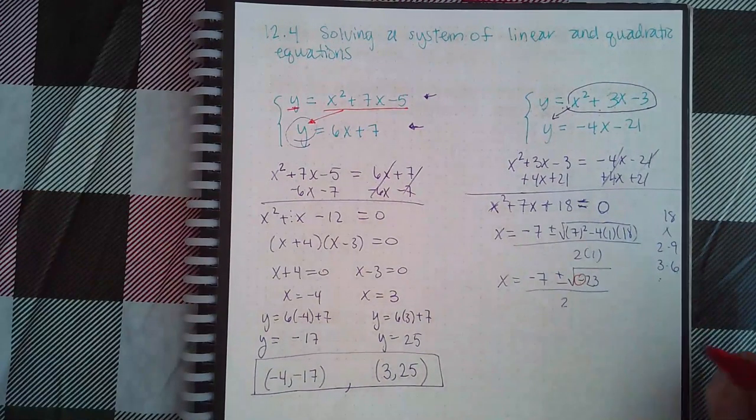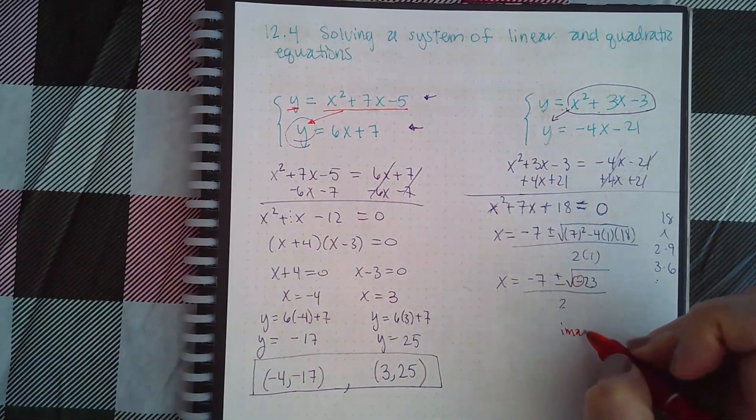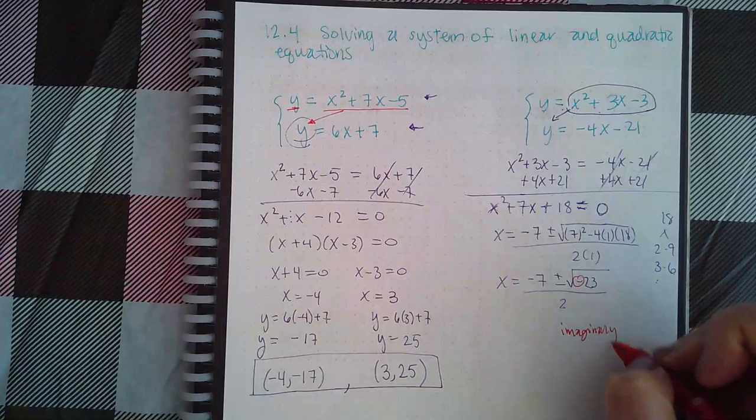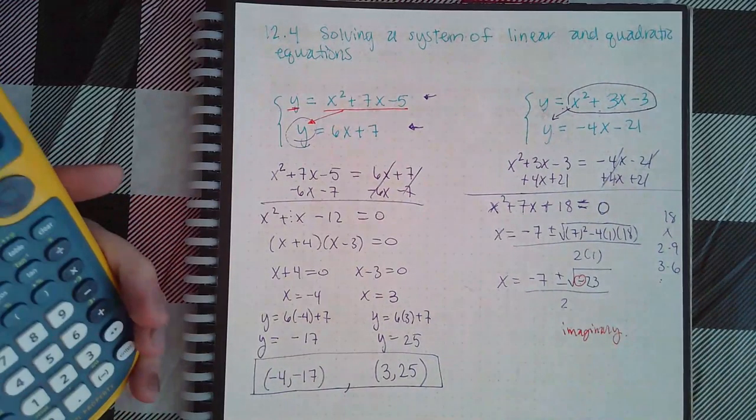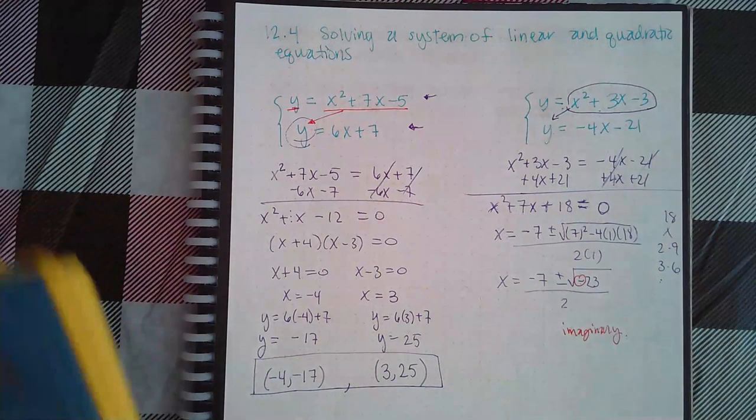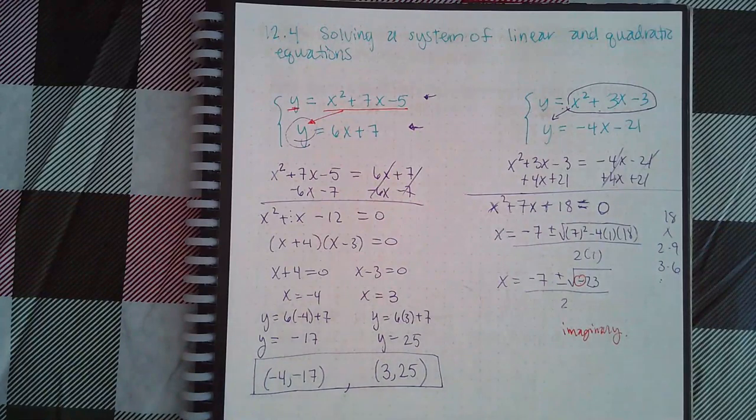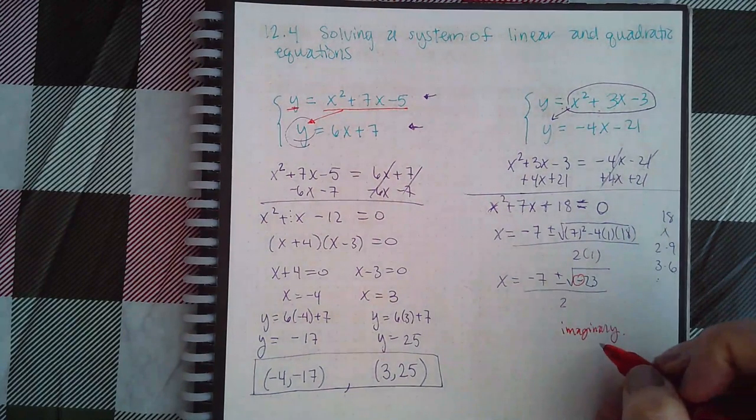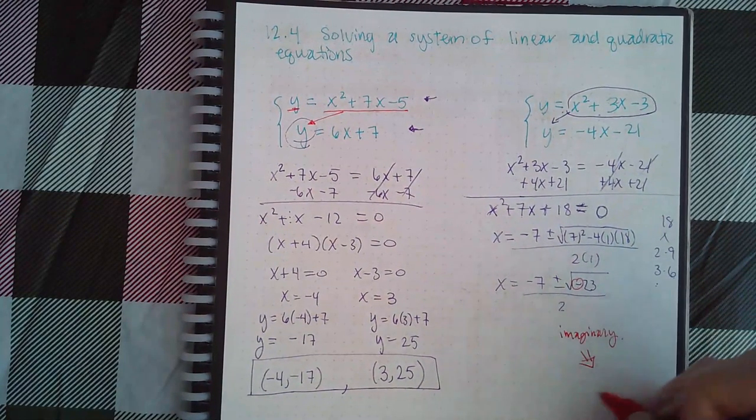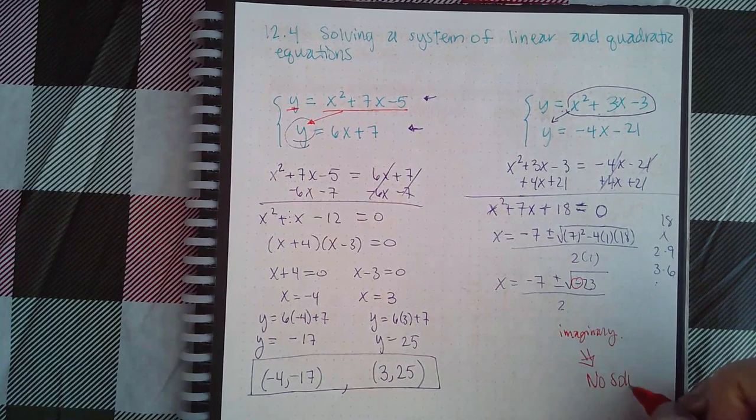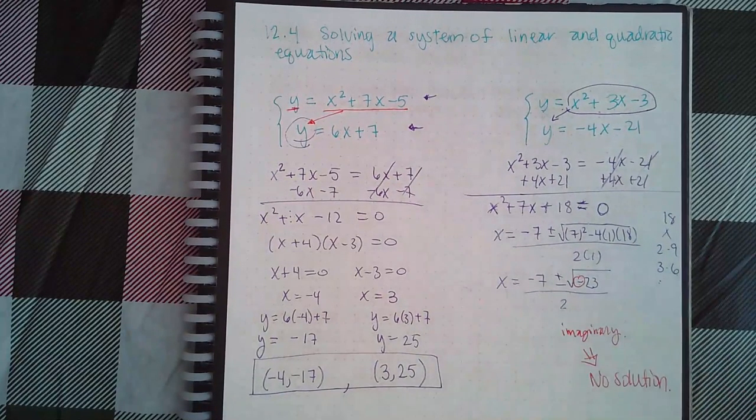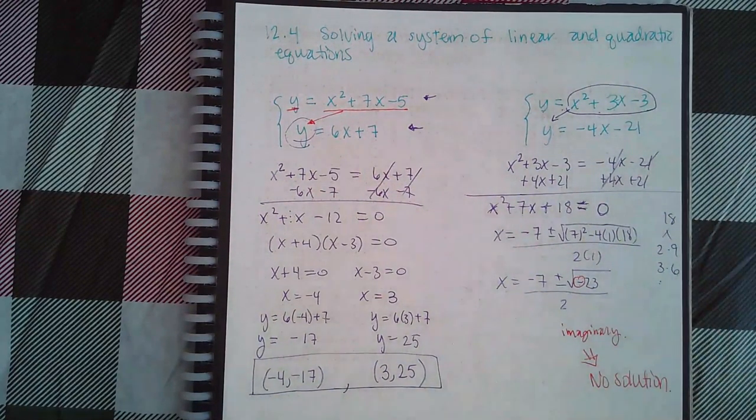Think about that: if you're trying to graph this, they're never going to intersect because you don't see imaginary things on the graph. So if I get an imaginary, that basically means no solution here. These two guys are never going to intersect at all.